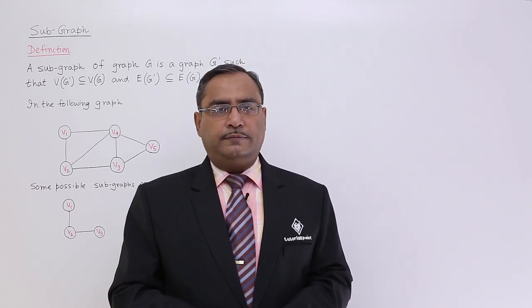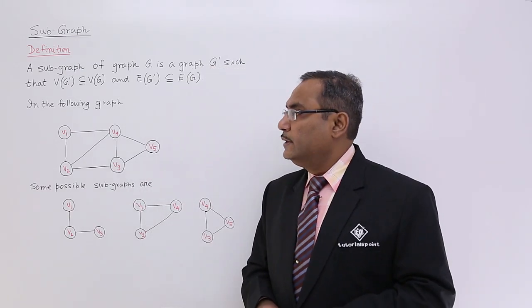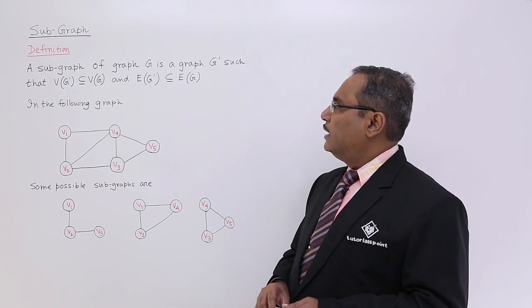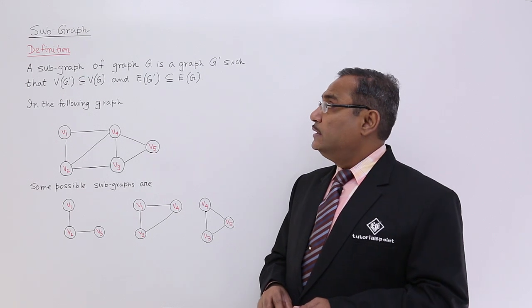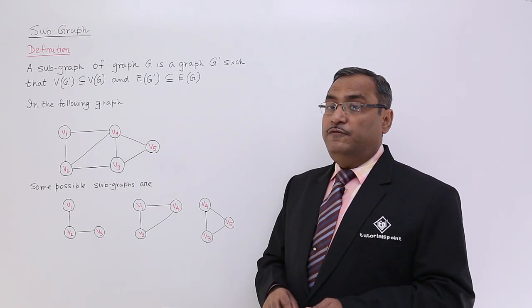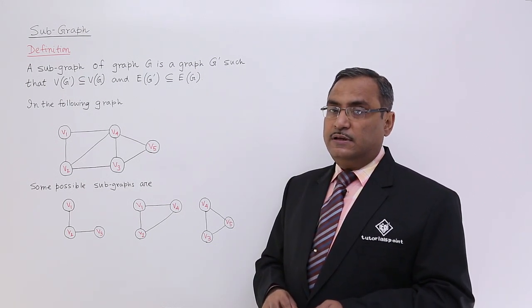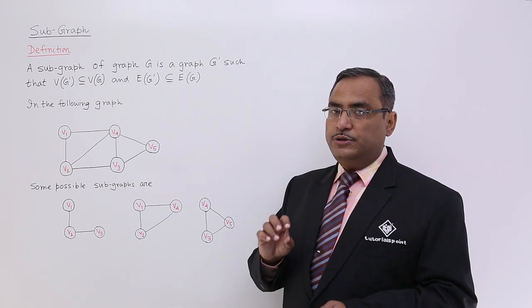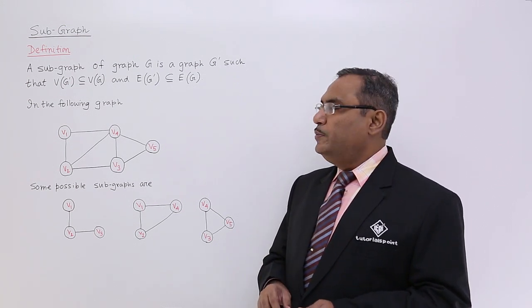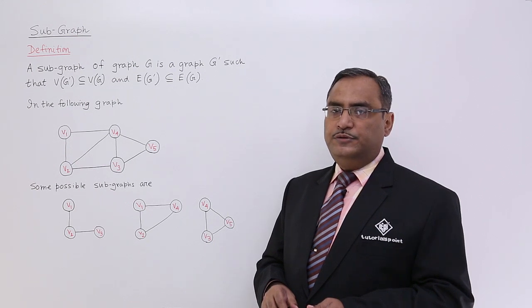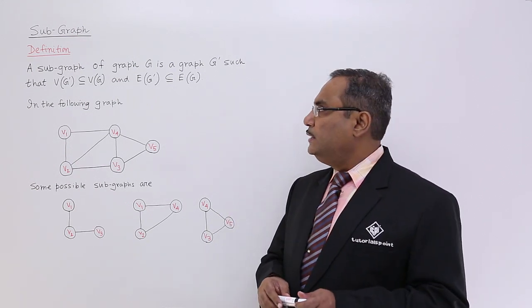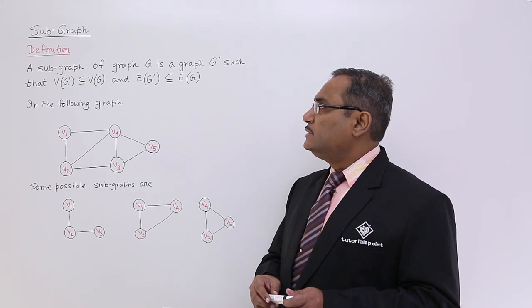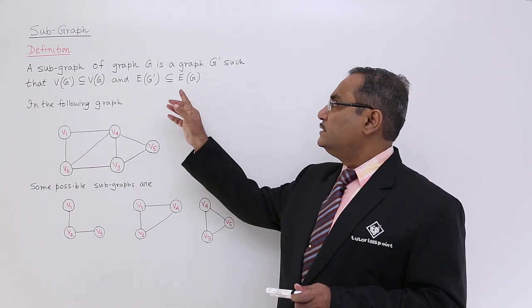Let us discuss subgraph of a graph. Here is the definition: A subgraph of a graph G is a graph G' such that V(G'), the vertices included in G', is a subset of V(G), and E(G'), the edges of G', is a subset of E(G).